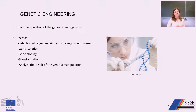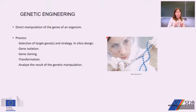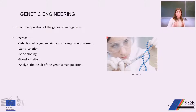Genetic engineering is the direct manipulation of the genes of an organism, and it follows a process. First, we select the target gene and the strategy, which can be to increase or decrease expression levels, or to eliminate the gene. Then we do an in-silico design of the whole cloning process. After that, we isolate the gene and introduce our gene of interest into a vector — gene cloning. We then introduce this recombinant vector into the organism of interest by transformation, and finally we analyze the result.